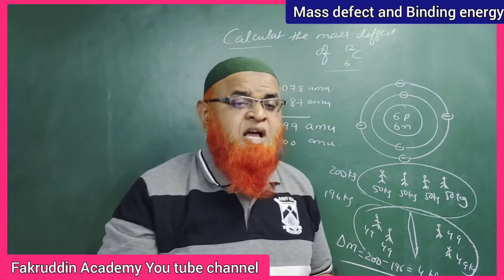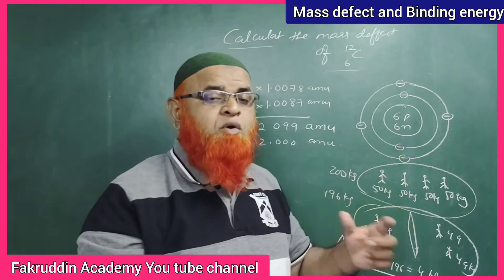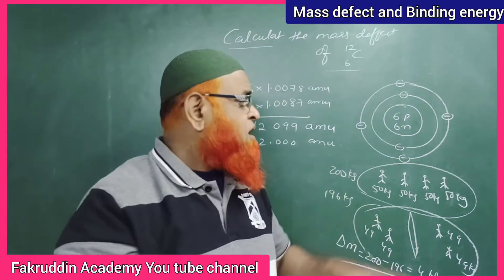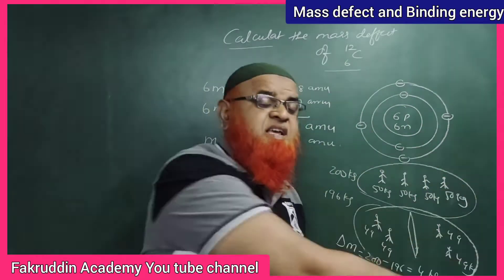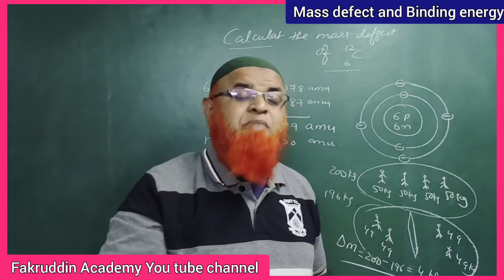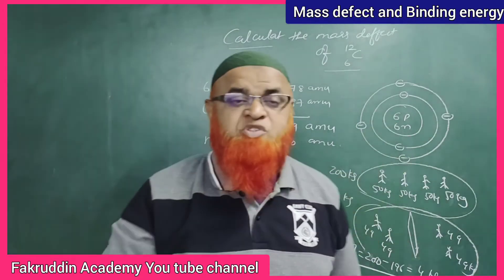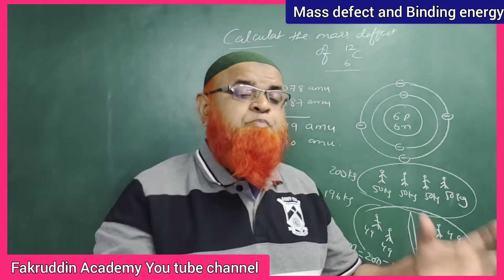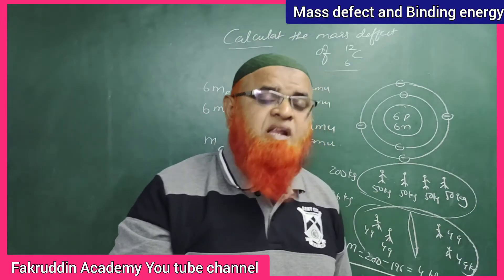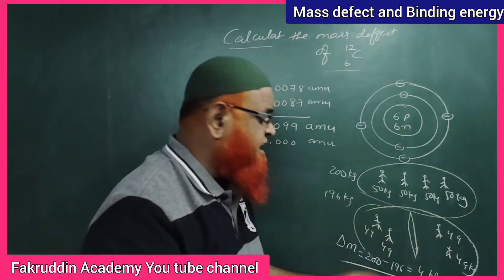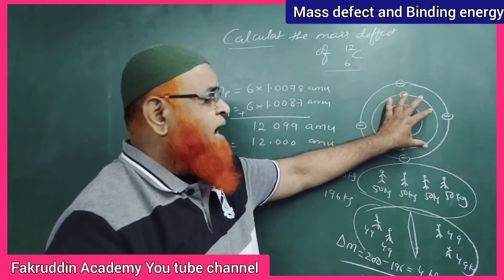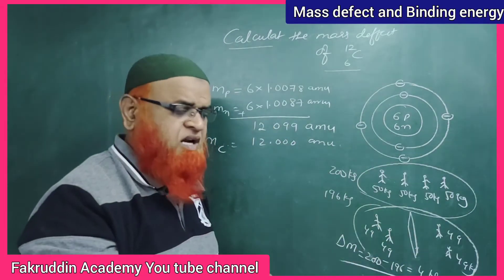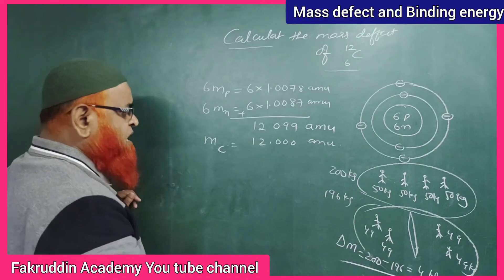The reason is that when 6 protons and 6 neutrons combine to form a carbon atom, some amount of energy is released — this is called binding energy. In a nucleus, when protons and neutrons combine, some energy is released. As energy is released, their masses are reduced. So carbon, after the combination of protons and neutrons, has its mass reduced in the form of energy.